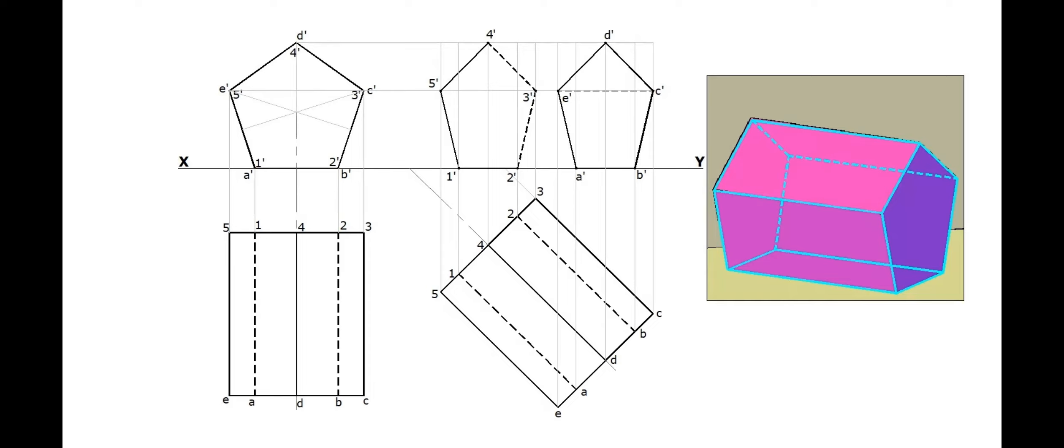Long edges 5' E' and 4' D' are visible. Hence, should be drawn dark. Long edge 3' C' is invisible. Hence, should be drawn as dashed lines.